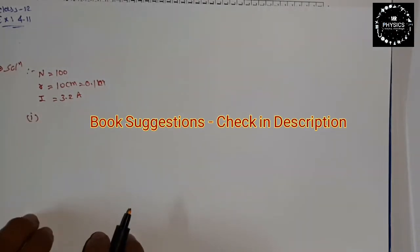We will start but first we should write the value of each. I'm writing over here. You can see that in the solution. Number of turns N is 100. The radius r is equal to 10 centimeters, so convert directly: 0.1 meters, where the current I is equal to 3.2 amperes.